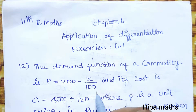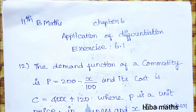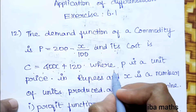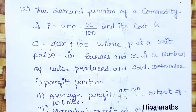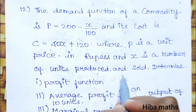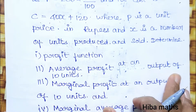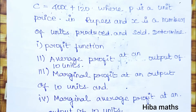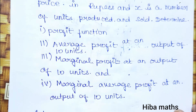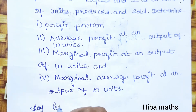The demand function of a commodity is p = 200 - x/100, and its cost is c = 40x + 120, where p is the unit price in rupees and x is the number of units produced and sold. We need to determine: the profit function, average profit at an output of 10 units, marginal profit at an output of 10 units, and marginal average profit at an output of 10 units.